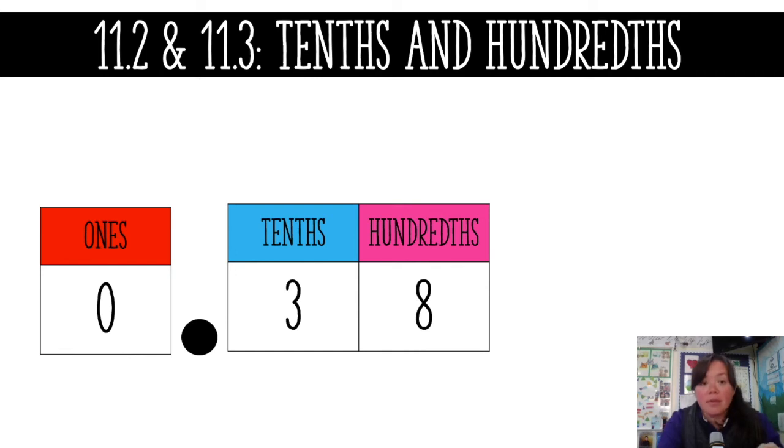Let's take, for example, 38 hundredths. Okay, we got three tens, we have eight in the hundredths place, so we would pronounce it 38 hundredths.